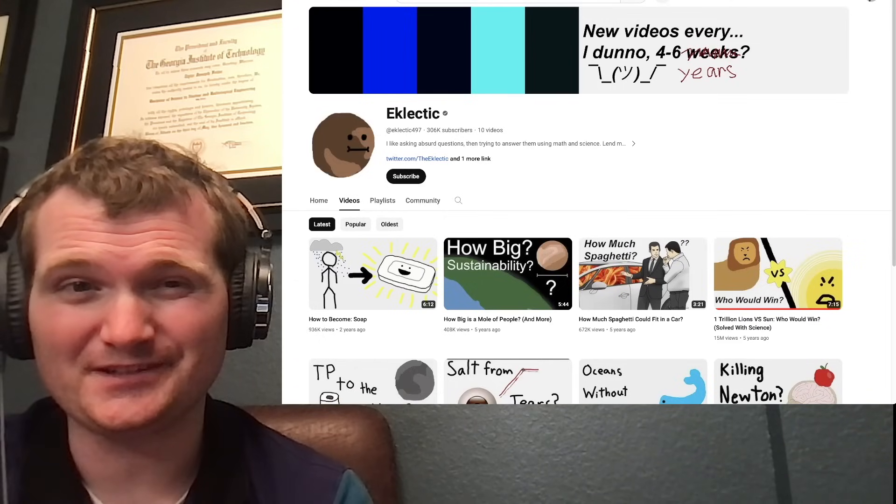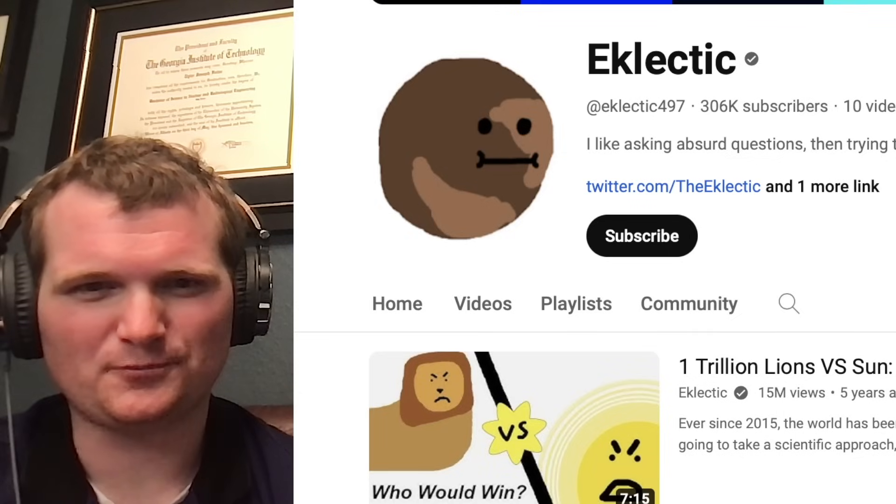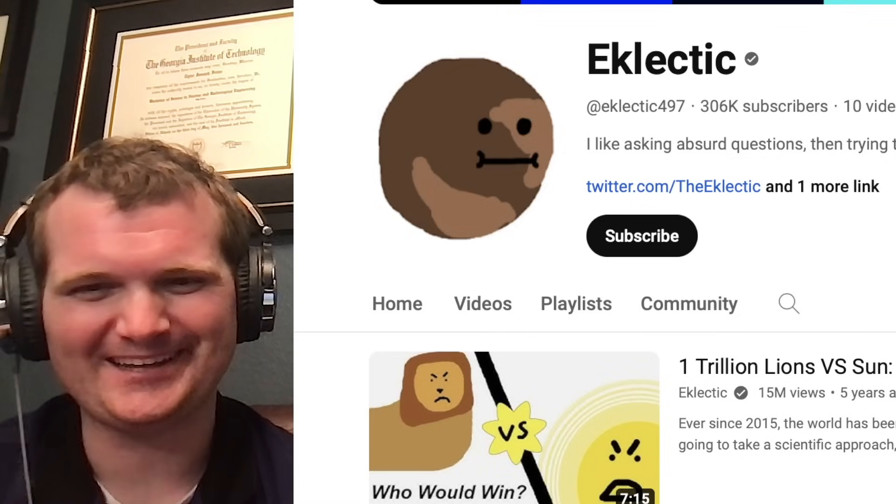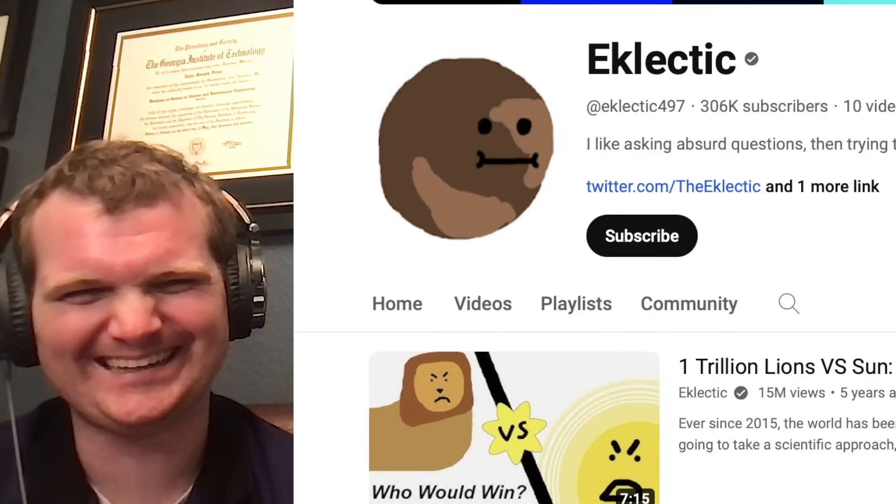Today we're going to be looking at a very silly video by Eclectic. This is 1 trillion lions versus the sun, who would win and solved with science. Believe it or not, some crazy scenarios like this do come up in nuclear engineering related topics. Let's get right into this.